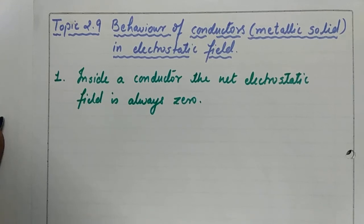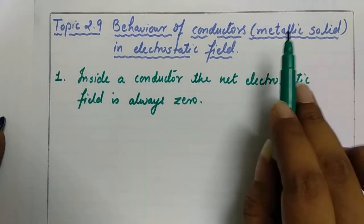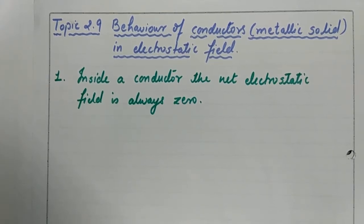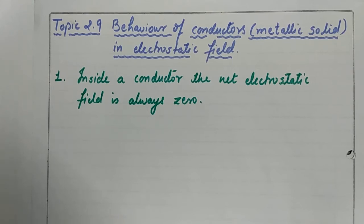Here we are going to see how conductors behave when they are placed in an external electrostatic field, and particularly we are going to talk about metallic solids. Whenever we place a metallic solid conductor inside an electrostatic field, the net electrostatic field inside the conductor is always zero. This is the property of a conductor placed in an external electrostatic field. Now we will understand how this happens.